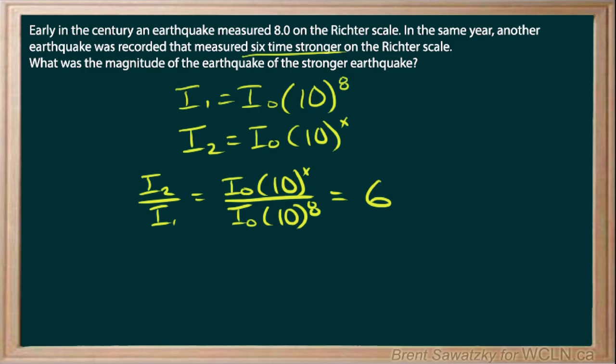So here's the start of our equation. We know that those base intensities can cancel. So we're left with 10^(x-8). Again, both base tens, we just subtract the exponents, equals six.